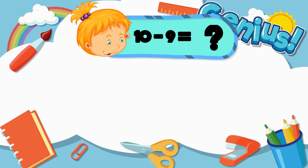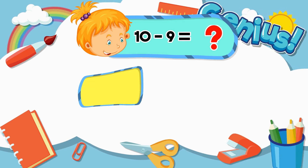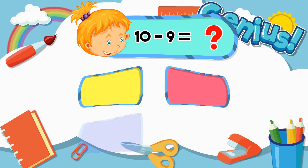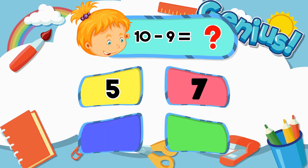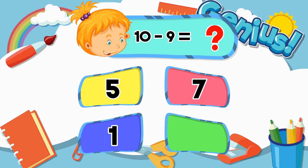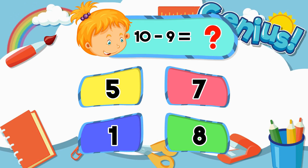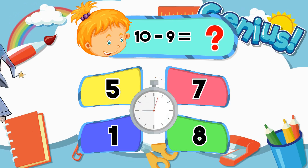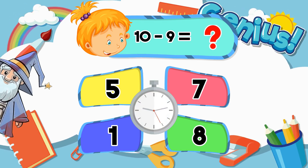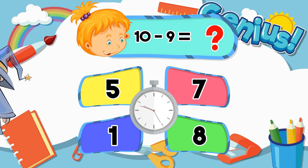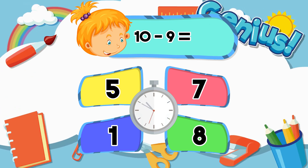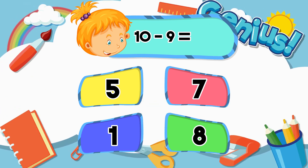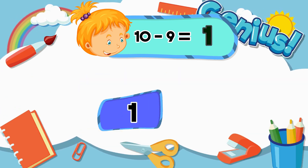What is 10 minus 9? Options: 5, 7, 1, 8. Answer: 1.